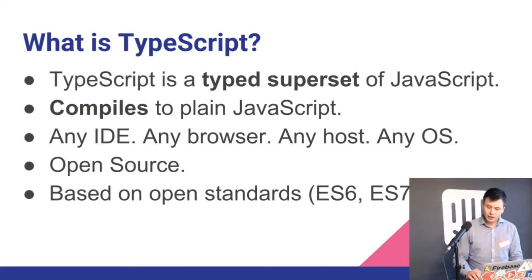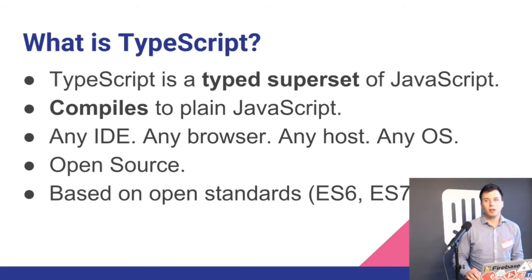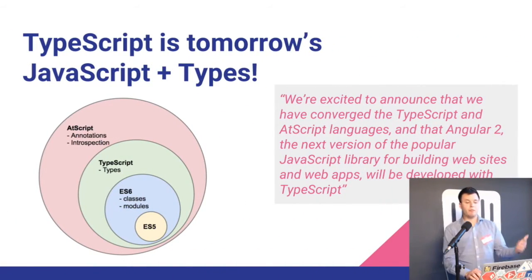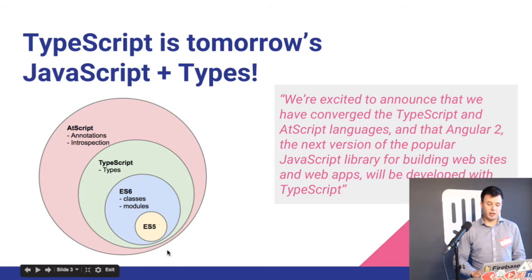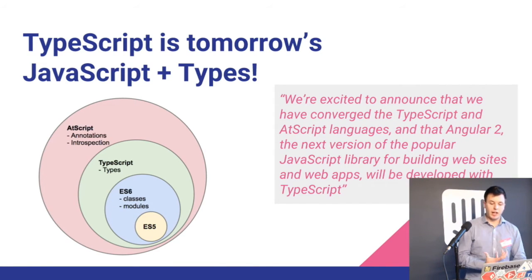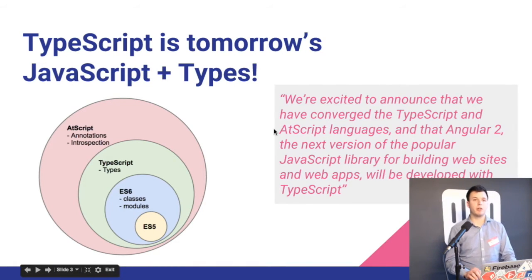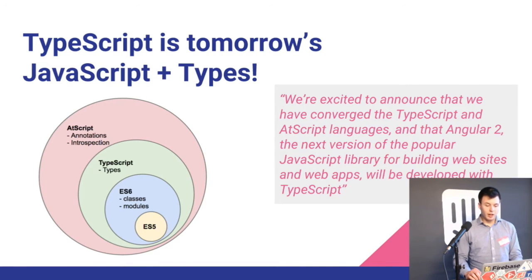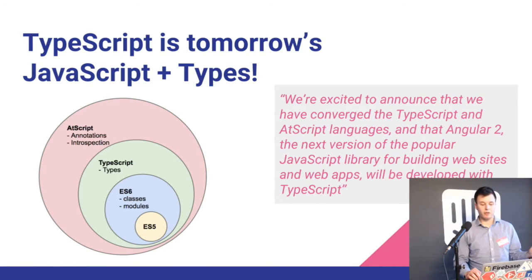TypeScript is based on the standards, which is important because in the past we hated what Microsoft used to do with the web — things like VBScript and non-standard JavaScript. But TypeScript is actually based on the ECMAScript standards. In terms of history: we have JavaScript ECMAScript 5, the version we've been using for years. Then there's ECMAScript 6, which introduces classes and modules. TypeScript is basically everything from ECMAScript 5 plus ECMAScript 6 plus types.